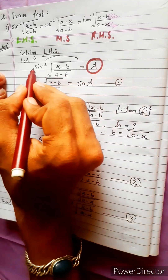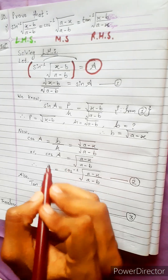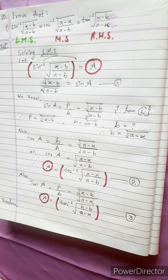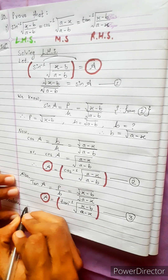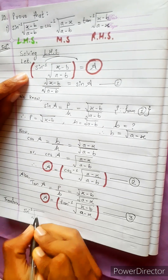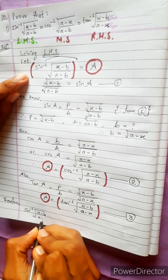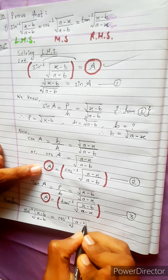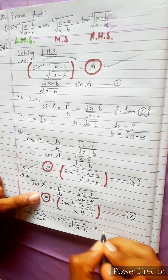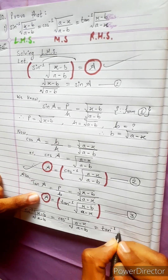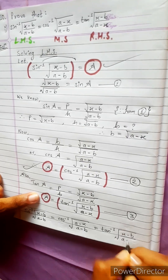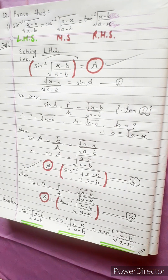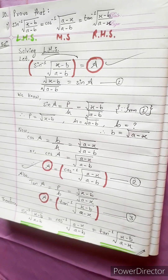Combining all three equations: sin inverse square root (x minus b) divided by (a minus b) equals cos inverse square root (a minus x) divided by (a minus b) equals tan inverse square root (x minus b) upon (a minus x). Hence proved. Now be ready for the next question. Thank you and bye bye.